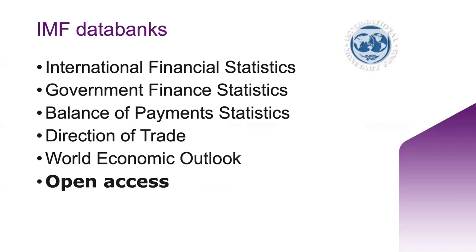For the IMF databanks - International Monetary Fund - the primary purpose of the fund is to maintain international financial stability, and the data it collects reflects that theme. The fund collects detailed macroeconomic data from all its member countries, watching out for financial crises and balance of payments difficulties. These are the five major data banks produced by the IMF. Collectively they provide a global picture of economic development and international trade over the last 50 years, and all of these datasets are open access.